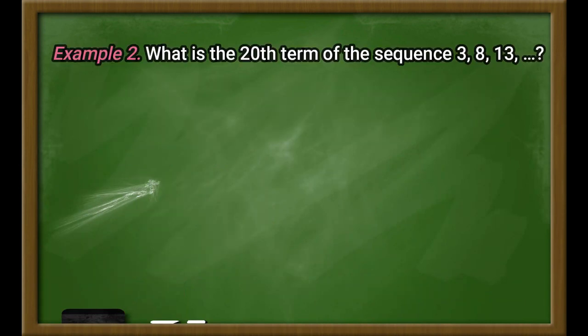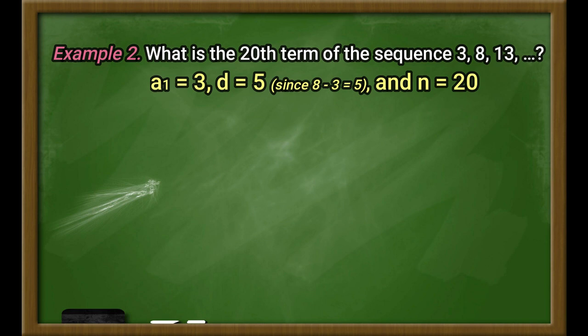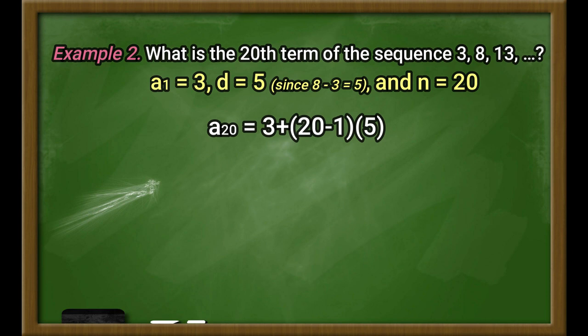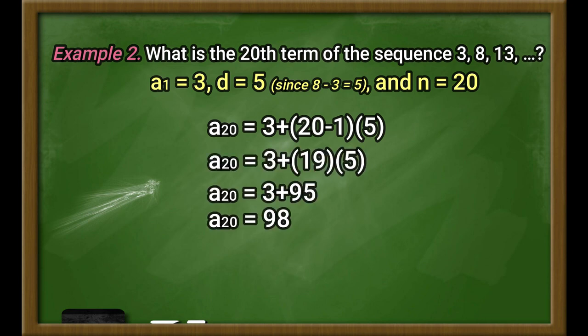Example number 2: What is the 20th term of the sequence 3, 8, 13, and so on? This sequence is an arithmetic sequence since we are adding a constant number. A sub 1 equals 3, d equals 5, and n equals 20. Substituting the values, we get A sub 20 is equal to 3 plus 20 minus 1 times 5. Simplifying, we have A sub 20 equals 98.